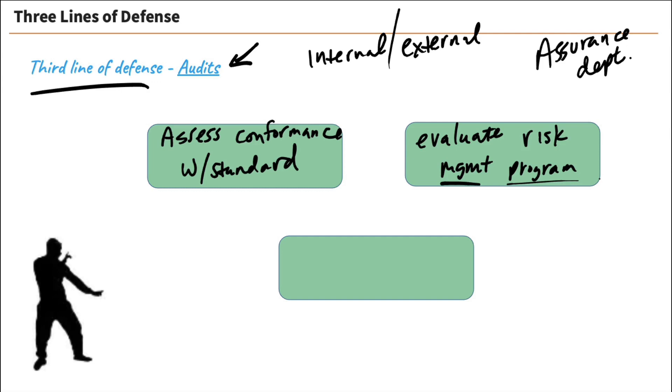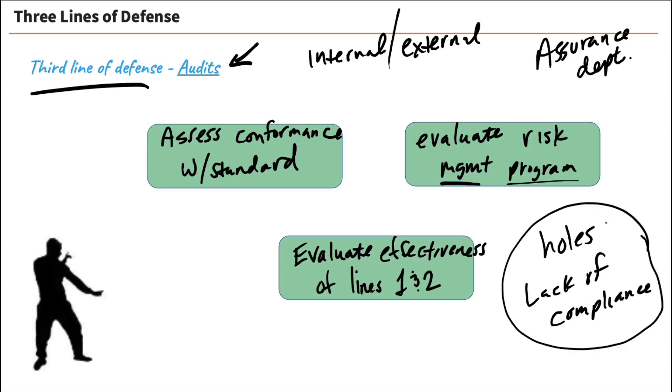And lastly, our auditors are there to evaluate the effectiveness of the first two lines of defense. Because if lines one and two aren't out there doing their job, we need to know about it. That's what the auditors are there to help us out with so that we can identify holes in the program or holes in people doing what they're supposed to be doing. A lack of compliance is what it comes down to.